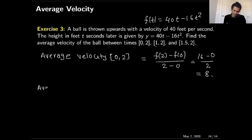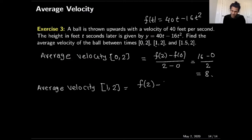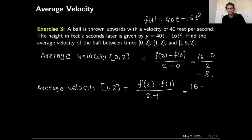Next, the average velocity on the interval 1 to 2 is [f(2) - f(1)] / (2 - 1). f(2) = 16 again; f(1) = 40 - 16 = 24. So the average velocity is (16 - 24) / 1 = -8. Instead of positive 8, the average velocity is negative 8 this time.